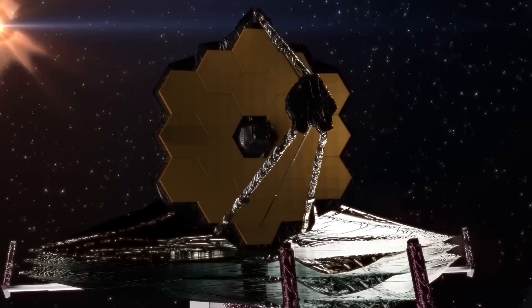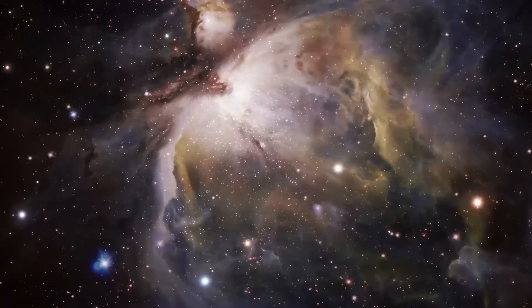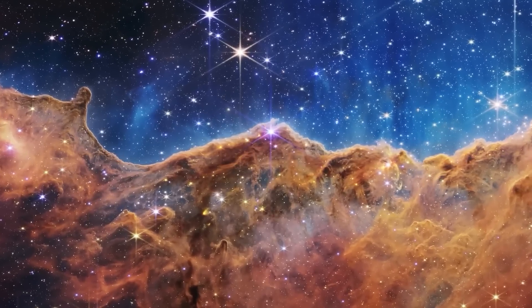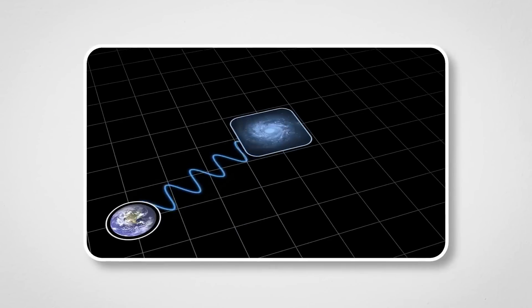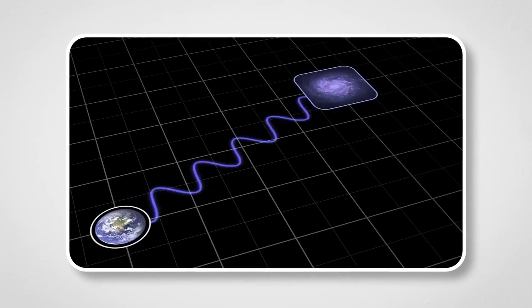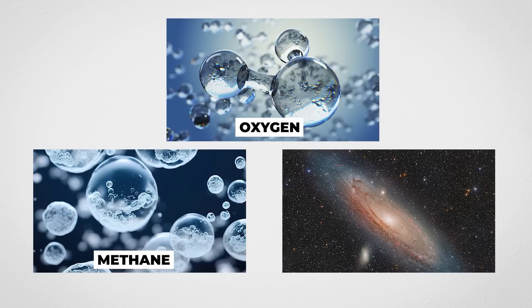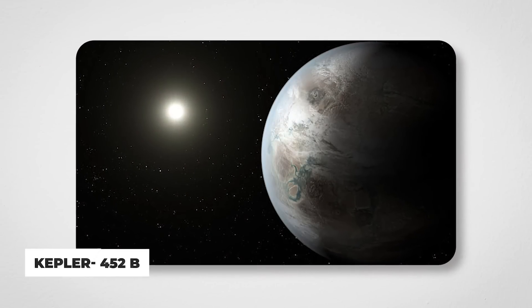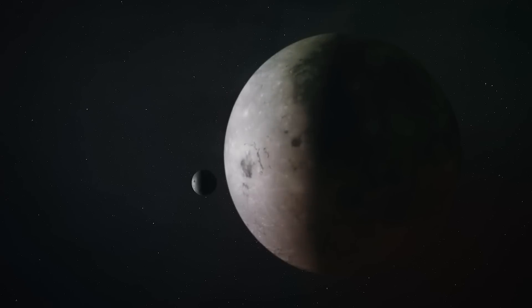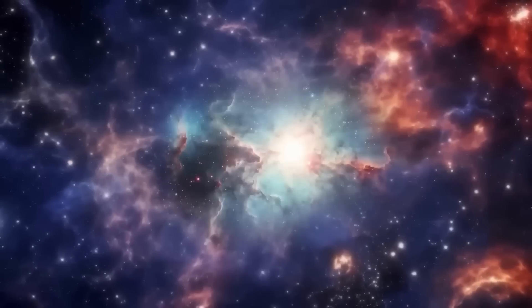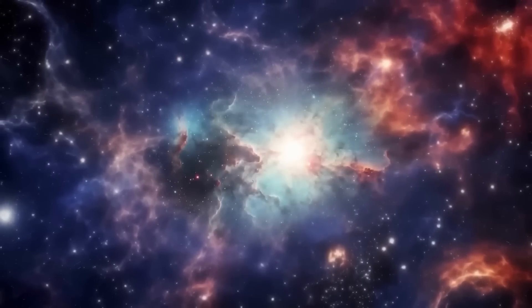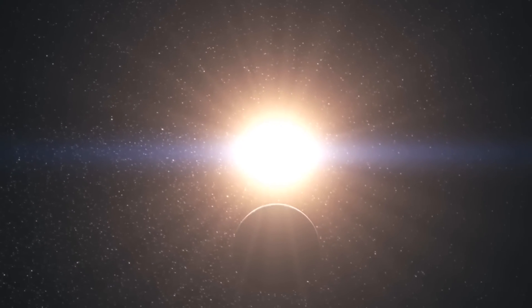And even if we find a planet with all those ingredients, we'd still have to figure out how to detect actual signs of life from so far away. That's where telescopes like James Webb come in, helping us analyze the atmospheres of distant worlds for hints of oxygen, methane, or other telltale signs of biology. One of the most promising candidates is Kepler 452b, often called Earth's cousin. This planet is just a bit larger than Earth and sits comfortably in its star's habitable zone. Its sun-like star has a lifespan that's billions of years longer than our own, offering plenty of time for life to potentially evolve.